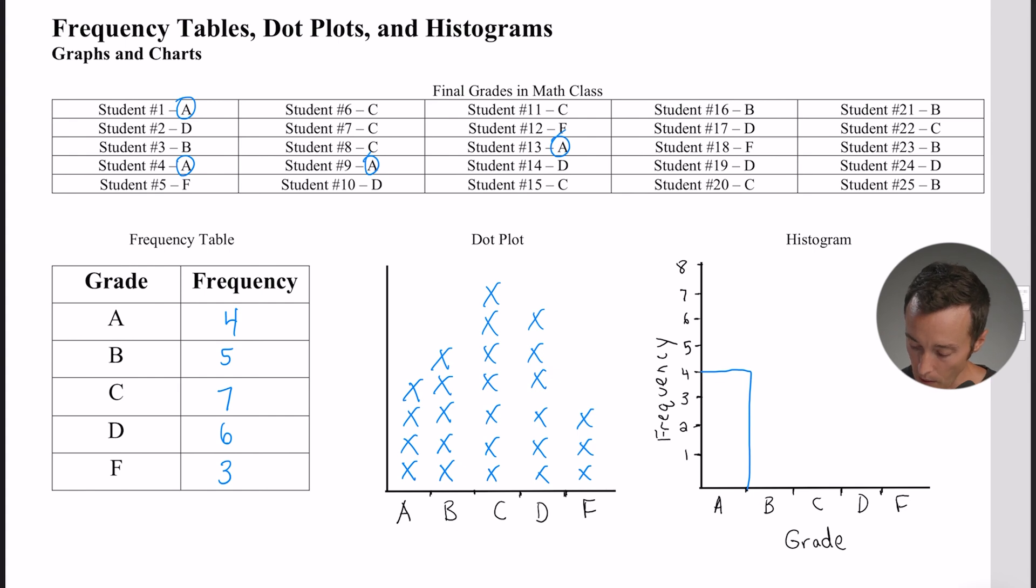So we're making a bar graph, and each one of the bars is the same width and the bars are touching. That's what makes it a histogram. The C has to go all the way up to seven. The D is going to start over from six because there were six D's, and then three F's.